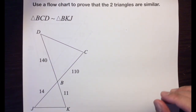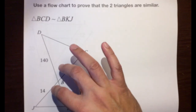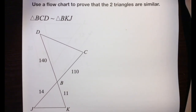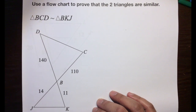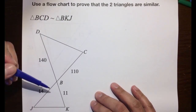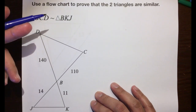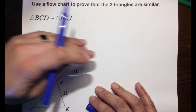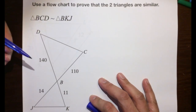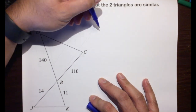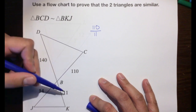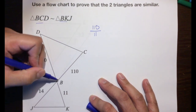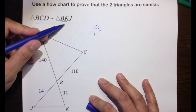Let's use our newfound knowledge to prove whether these two triangles are similar. They give us two pairs of sides but not a third pair, so we can't use side-side-side similarity. It looks like we have a pair of angles, but we need two pairs of angles for angle-angle similarity. It looks like we could use side-angle-side similarity. Let's compare 11 with 110 — BC and BK are the shorter of the two sides.